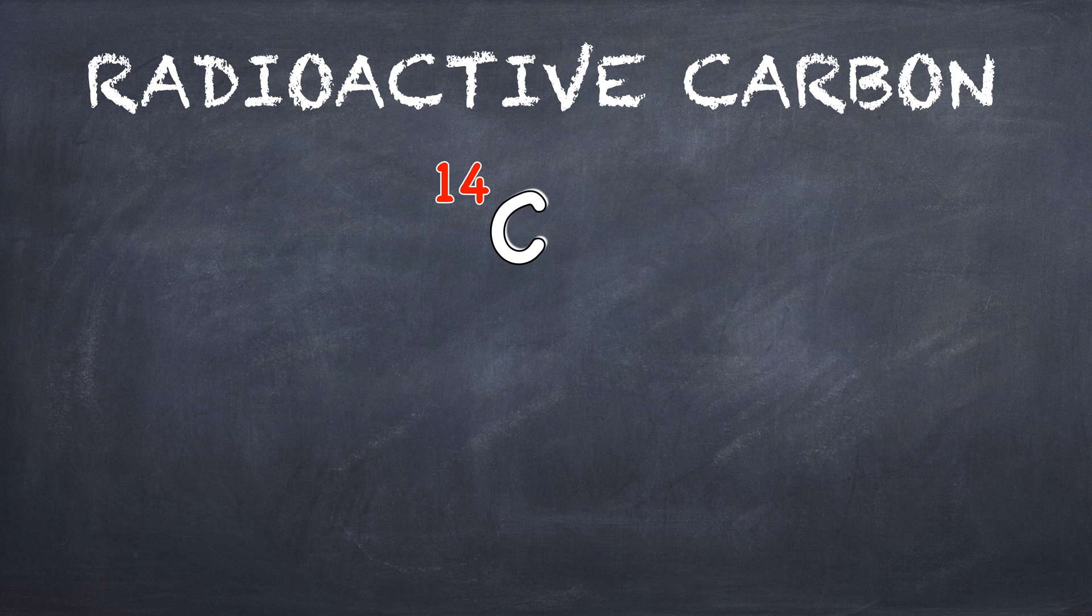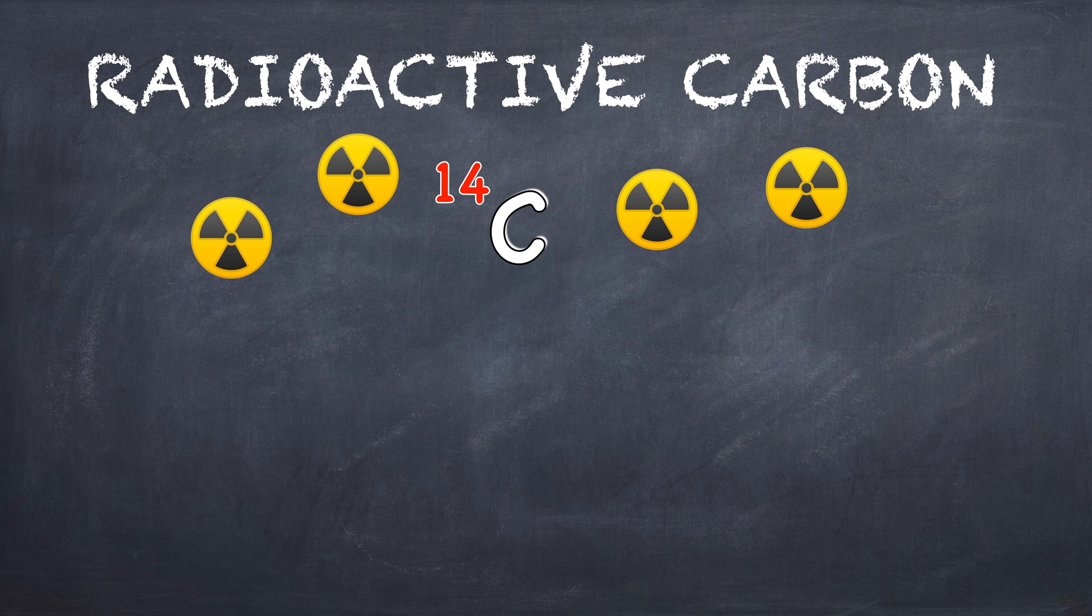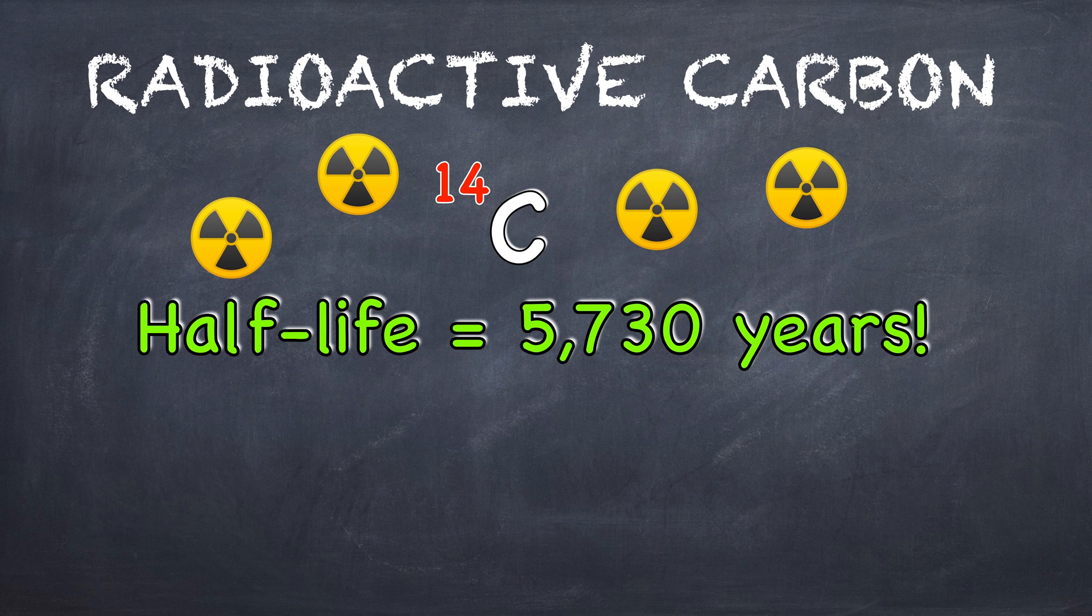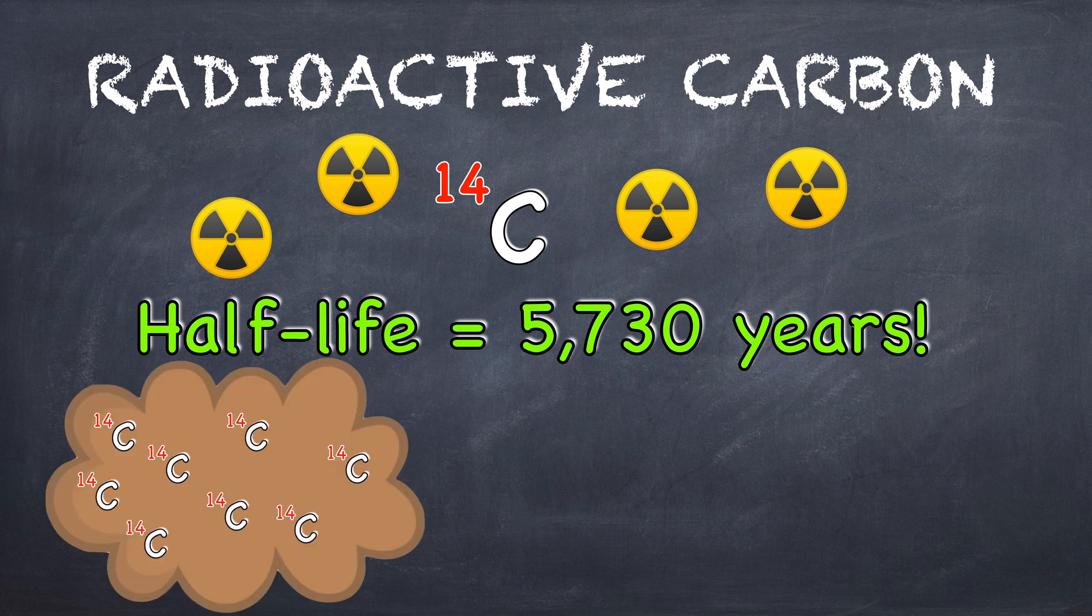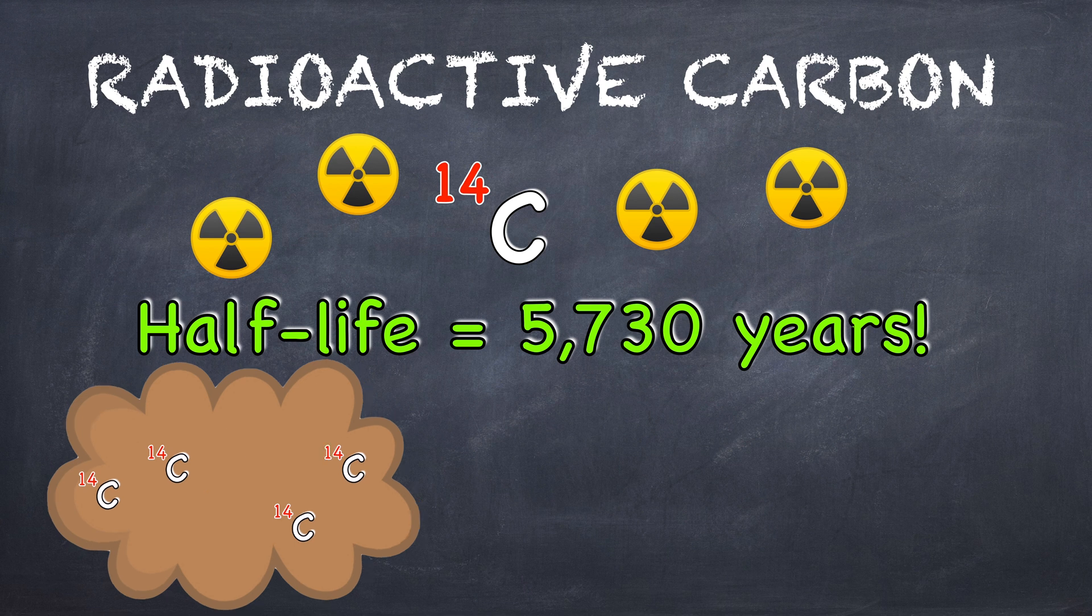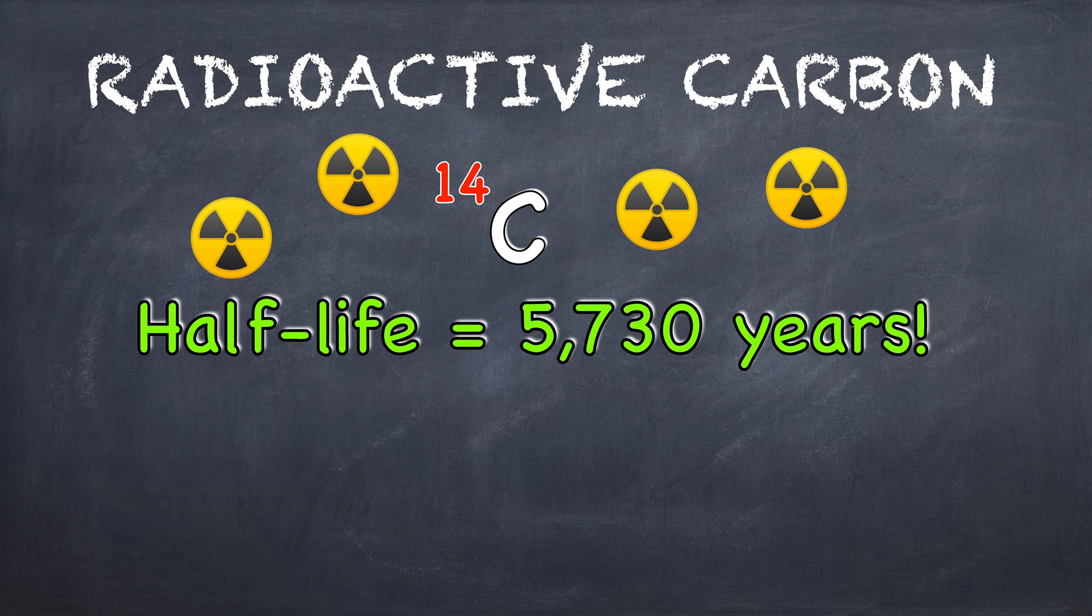Unlike carbon-12 and carbon-13, carbon-14 is unstable and goes through radioactive decay. Carbon-14 has a half-life of 5,730 years, meaning that after that time half of the carbon-14 decays away. This process is called radiocarbon dating.